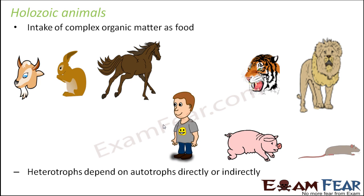Holozoic animals intake complex matter as food. Whatever we eat is in a very complex form, so that food cannot directly provide us energy. It needs to be converted into a simple form inside our body, and only then will it be able to provide us energy. You can see a lot of animals on screen — all of them are holozoic animals that eat complex organic matter.